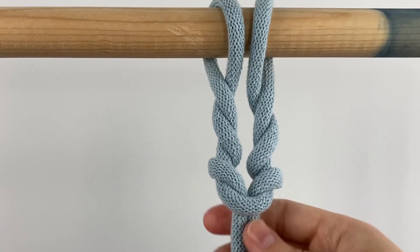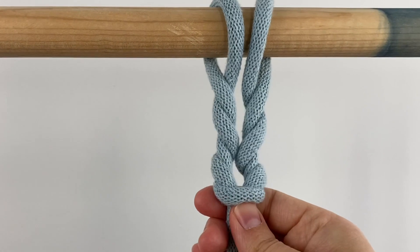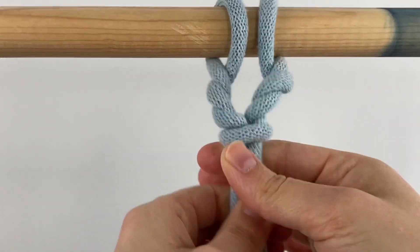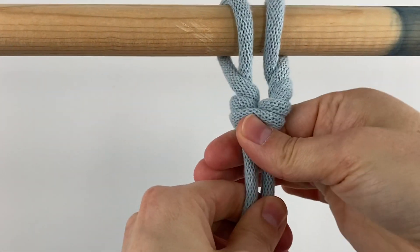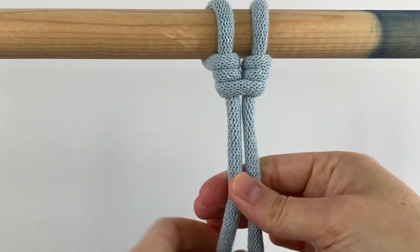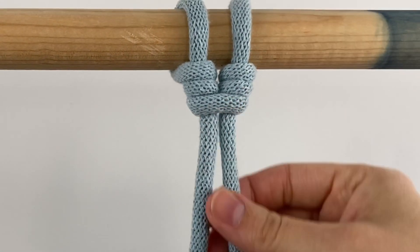And then it's going to look like this, and you just tighten it and push it up. And then it looks like that, and that is the cat's paw knot.